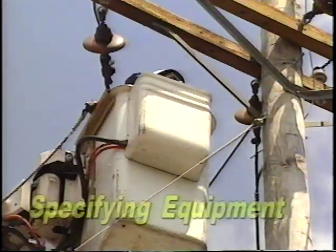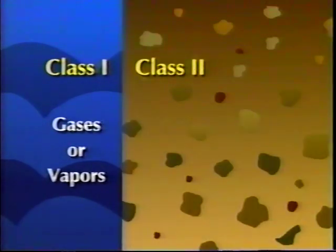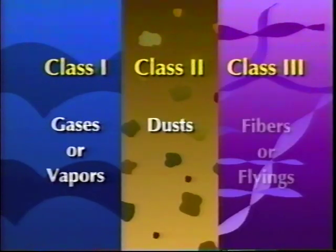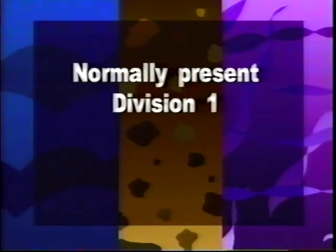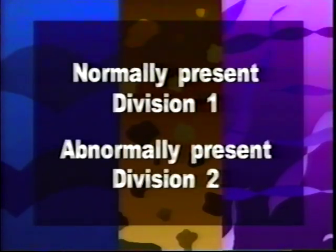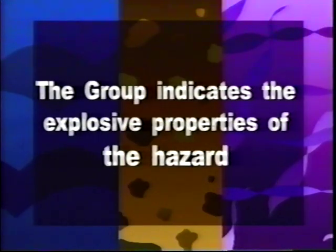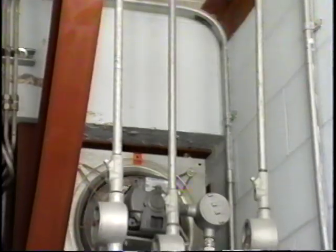Now for a quick review. If it's a gas or vapor, it's Class 1. If it's combustible dusts, it's Class 2. And if it's ignitable fibers or flyings, it's Class 3. If the atmospheres are normally present, it's Division 1. If the atmospheres are abnormally present, the area is Division 2. The group indicates the explosive properties of the hazard. If an area has more than one type of hazard, you must have equipment approved for each hazard type.